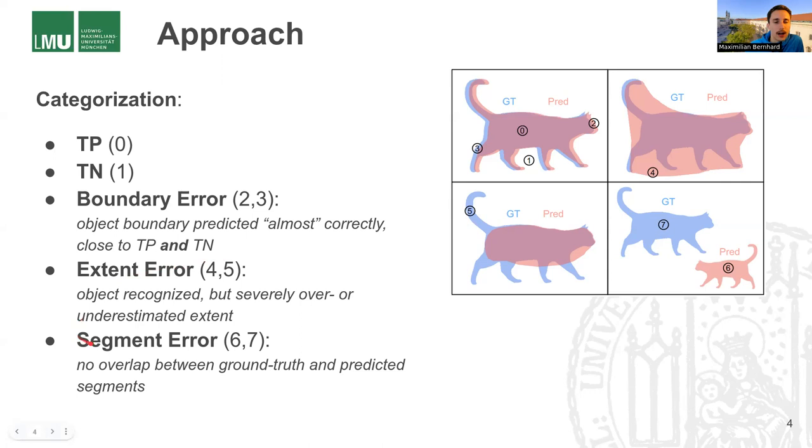And our last category is the segment error, which is the most fundamental one. Examples would be here at position six and seven, where the model was not able to recognize an object at all. So this ground truth cat here is not predicted at all. And for this prediction at position six here, there's no correspondence in the ground truth at all. So this is what we consider segment errors.